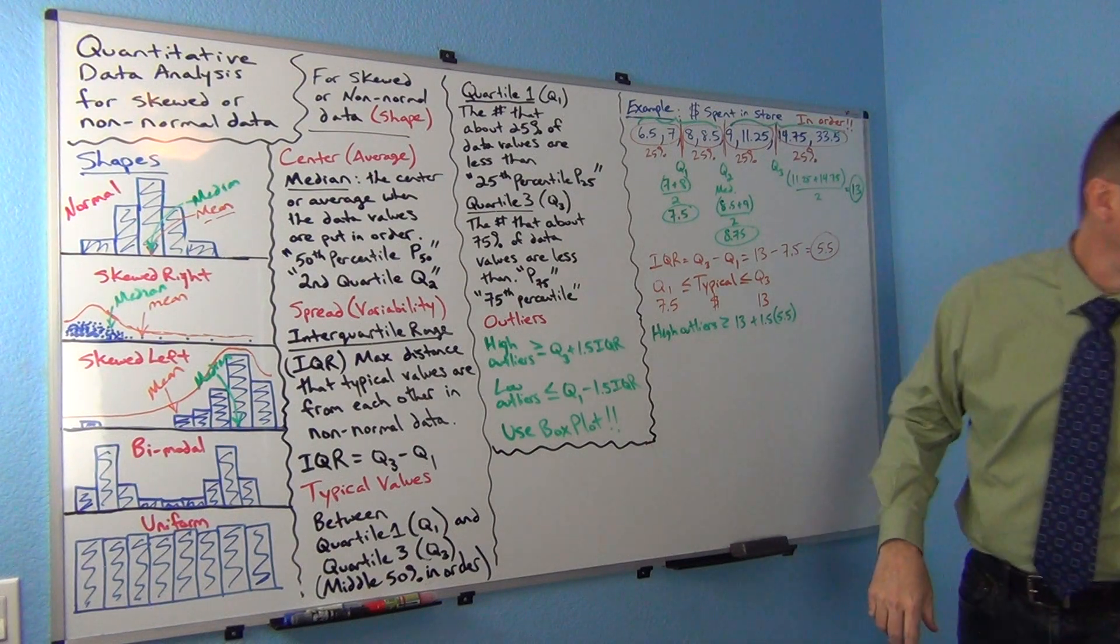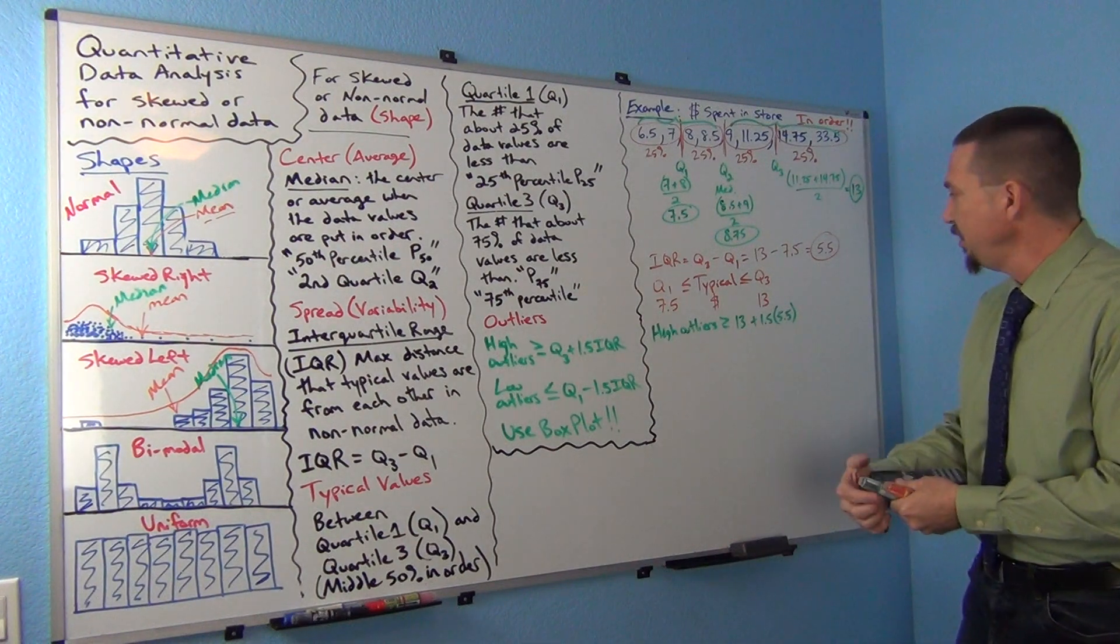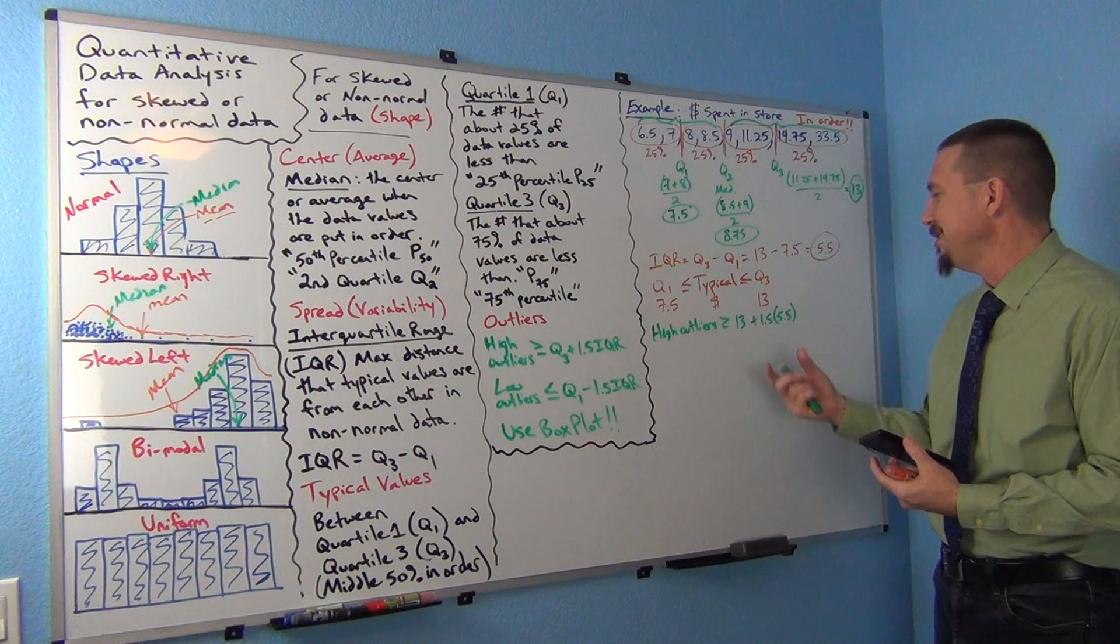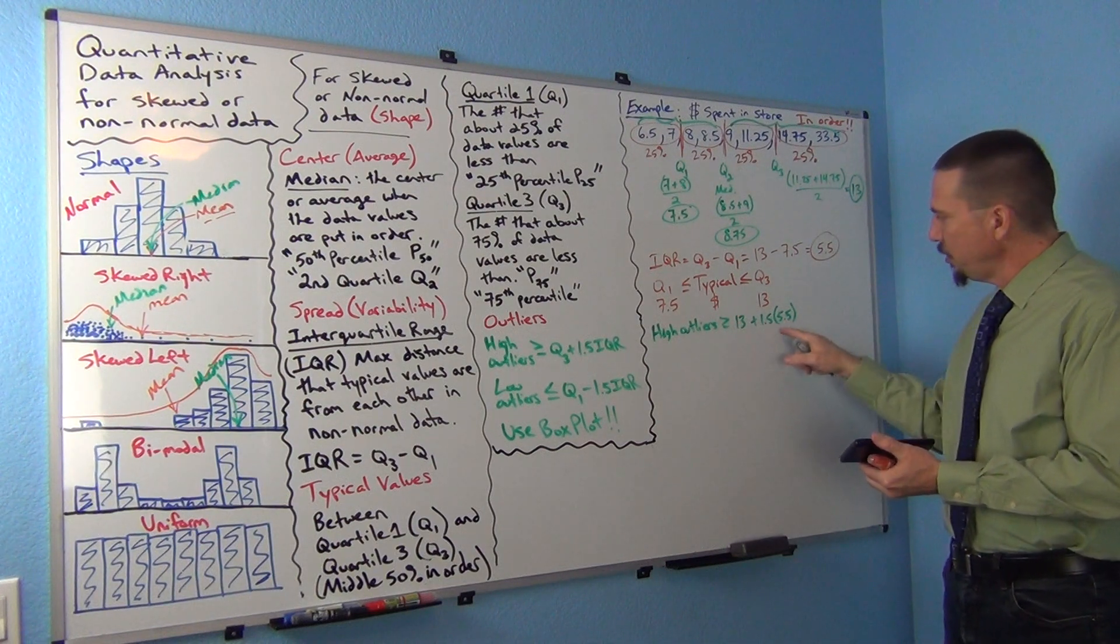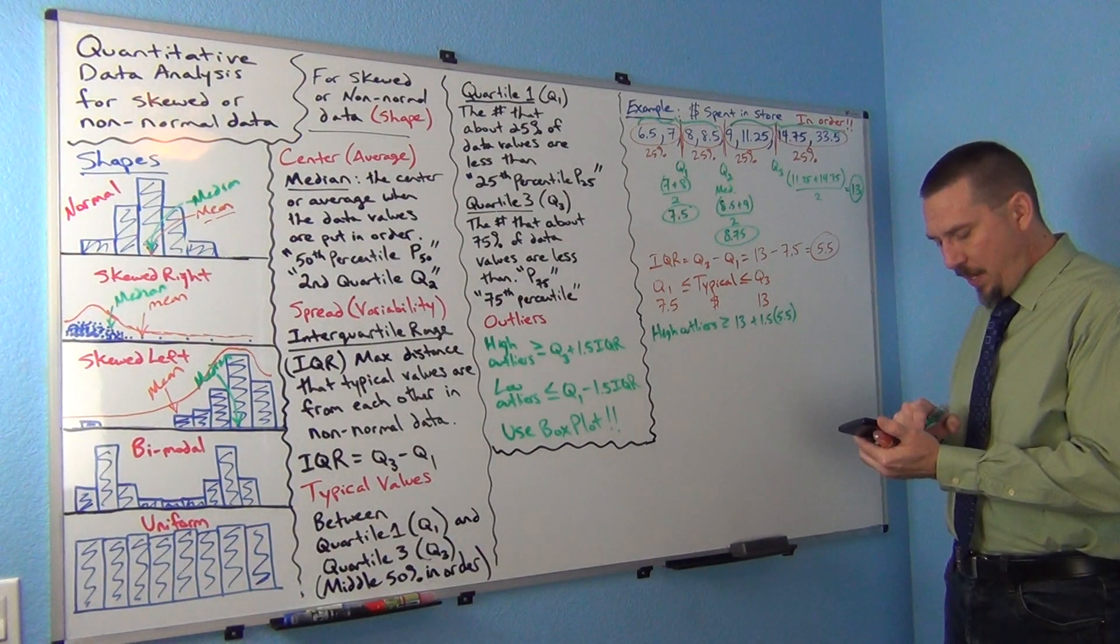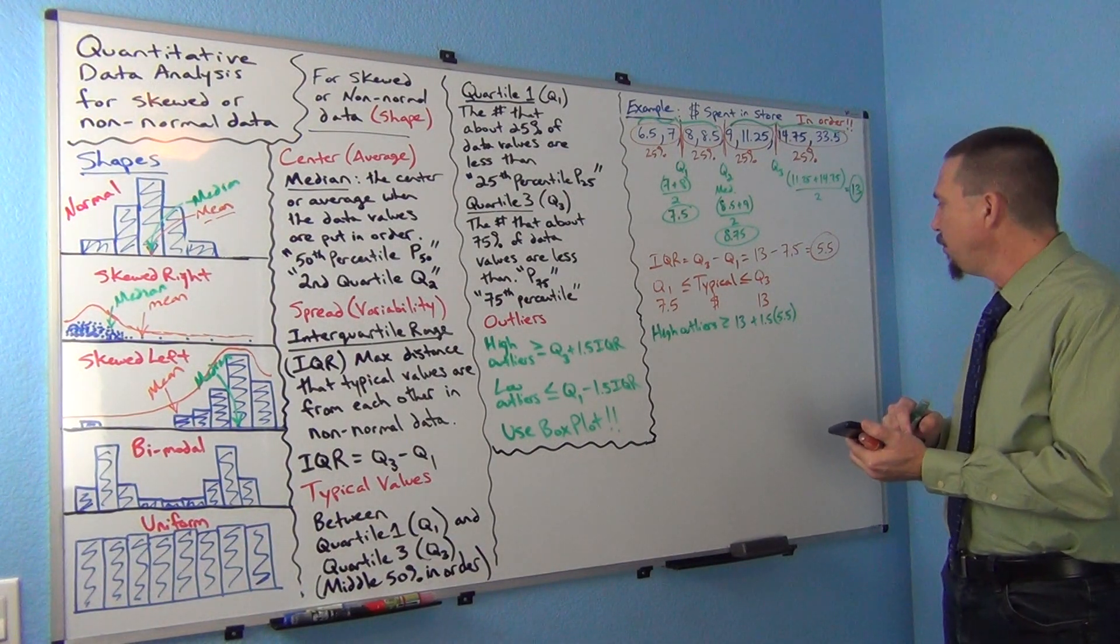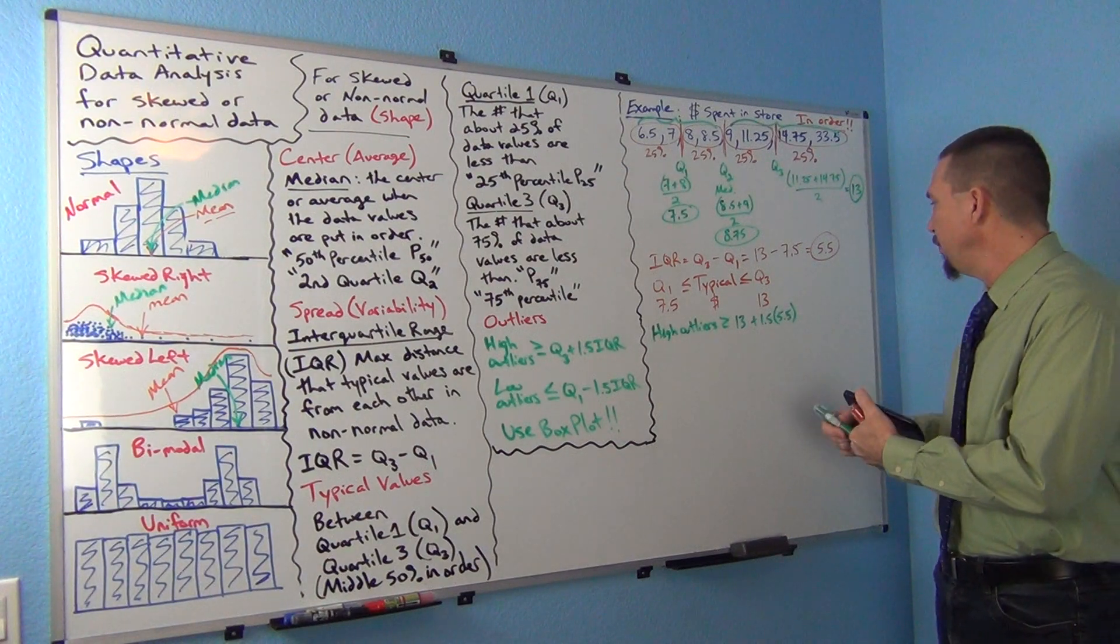So if I grab a calculator here, we can do this really quick. I don't use calculators very much, I usually use computer programs, but this kind I can use a calculator. Remember to do the multiplication first. So 1.5 times 5.5 gives us 8.25. If I add 13 to it, I get 21.25.